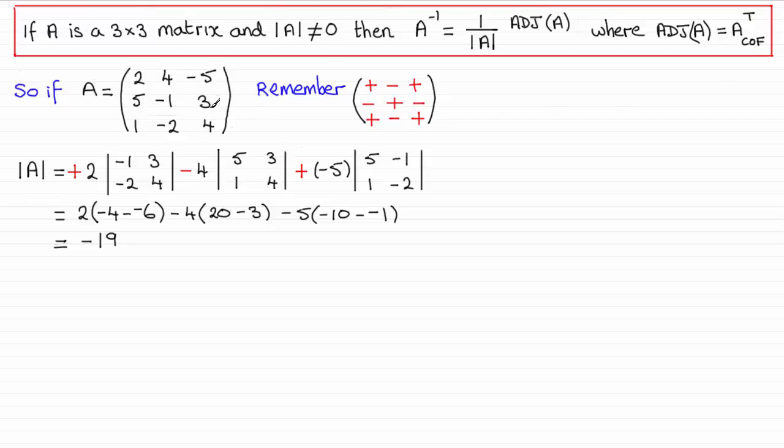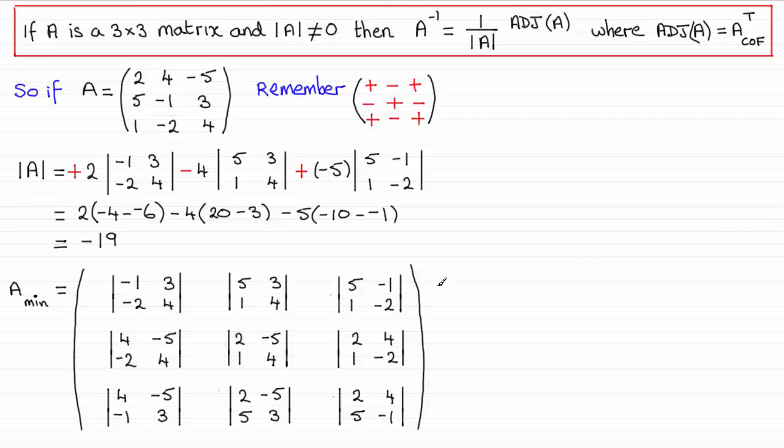What we needed to do was work out the minors of each of the elements of A, first of all. So, if you watched that video, you'd have seen that we had this result here. So, do go back and check that out if you're unsure. And then, to get the cofactor of the matrix A, we just had to put these signs, using this rule, in front of each of these determinants.